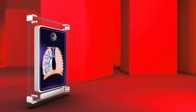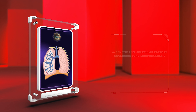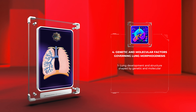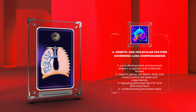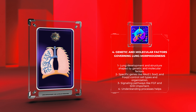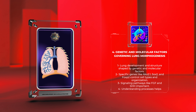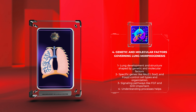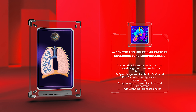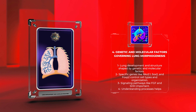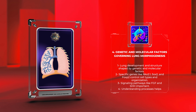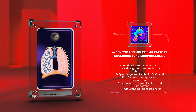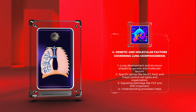Lung development and structure are shaped by genetic and molecular factors. Specific genes, like NKX2.1, SOX2, and FOXP2, control cell types and organization. Signaling pathways such as FGF and SHH are also important. Understanding these processes helps address lung malformations and respiratory disease treatment.